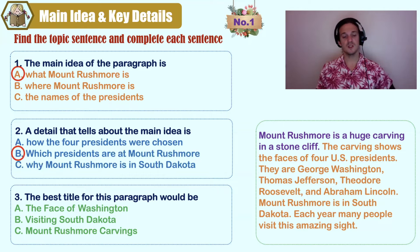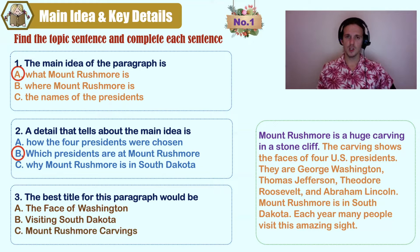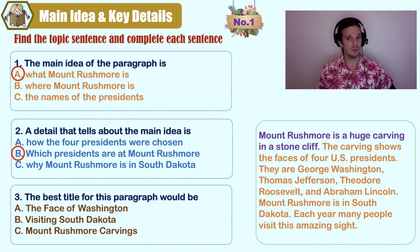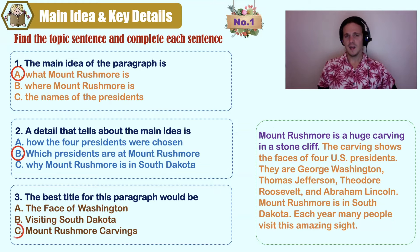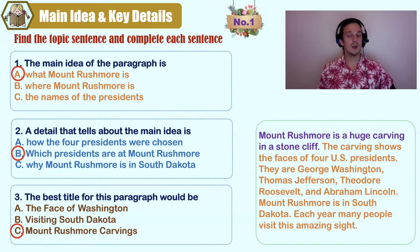The best title for this paragraph would be: A) The Face of Washington, B) Visiting South Dakota, or C) Mount Rushmore Carvings. Which title includes information from the topic sentence? It has to be C. How can you have a paragraph about what Mount Rushmore is without using 'Mount Rushmore' in the title?